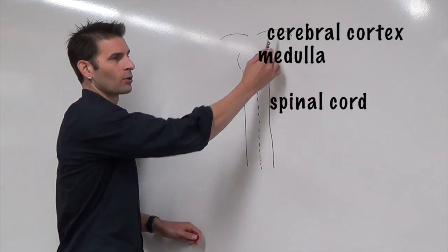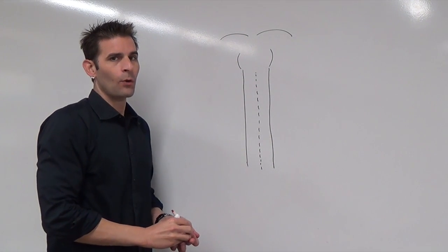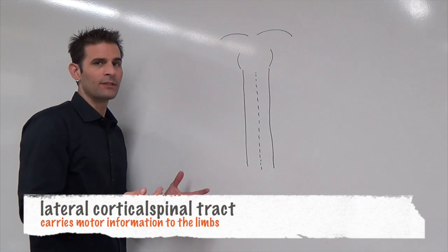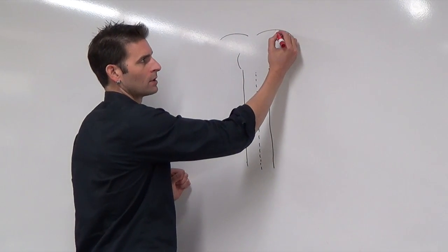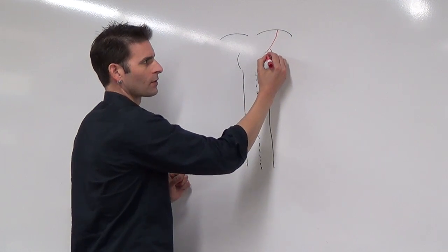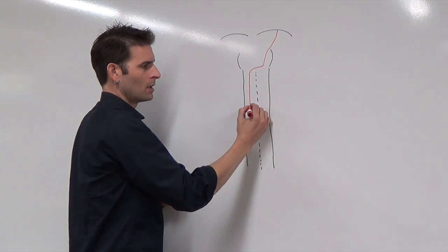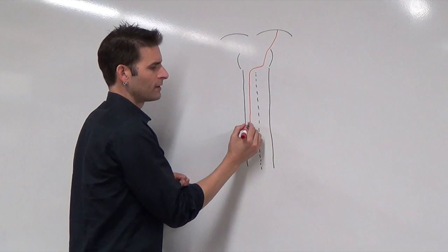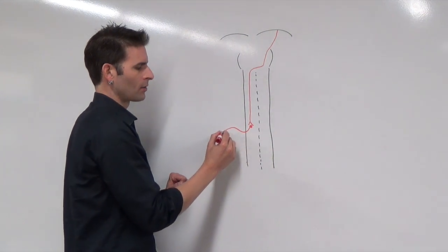We have drawn the cerebral cortex, the medulla, and our representation of the spinal cord. For the lateral corticospinal tract, which controls the skeletal muscles of your limbs, these are approximately 70 to 90% of the neurons leaving your cortex. The first neuron originates in the precentral gyrus of the cortex, enters the medulla, and immediately crosses over. It goes down the spinal cord and synapses with its second lower motor neuron, which then immediately leaves the spinal cord.